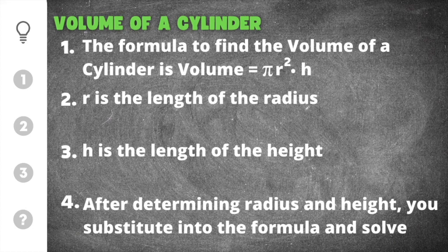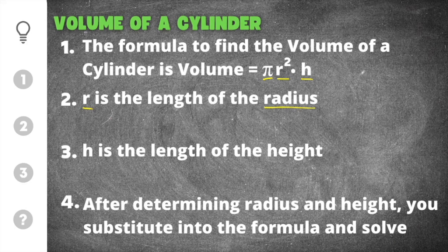There are four important things that we need to remember when solving volume of a cylinder. The first is that the formula to find volume of a cylinder is pi times r squared times h. R is the length of the radius, and the radius of a circle is the distance from the center of that circle to the outer edge — this is the radius.